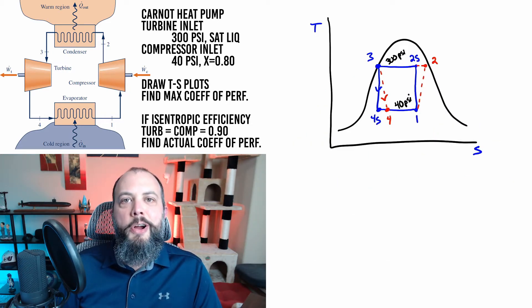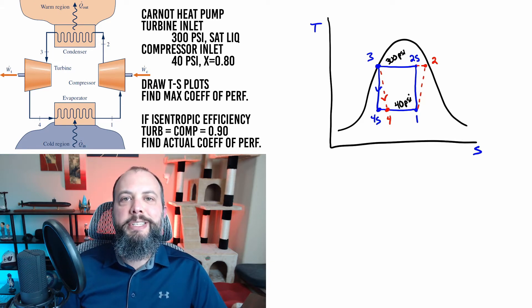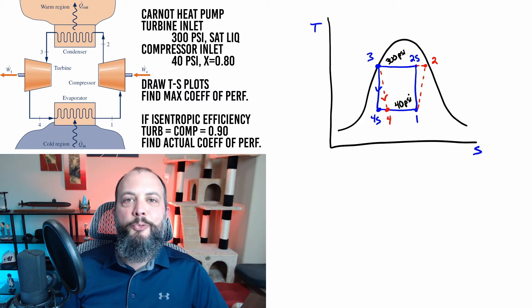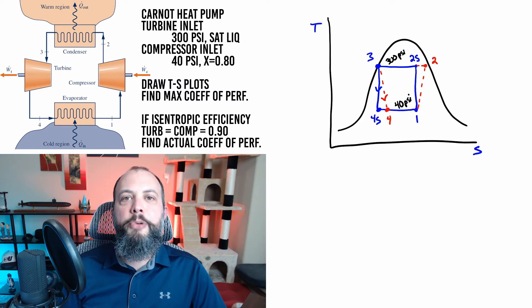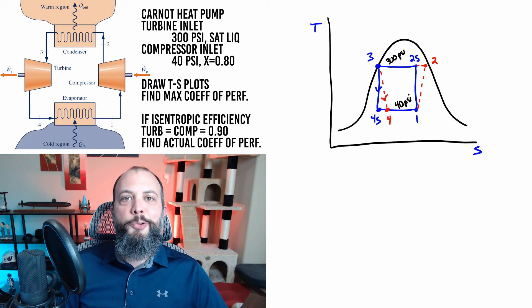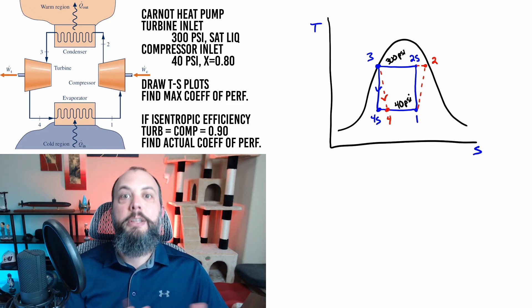And so with the information we have so far I'm able to draw the shown T-S plot. I've labeled point one as the inlet to the compressor and notice that I put an S after points 2 and 4. This blue rectangle is the main Carnot heat pump. Points 1 to 2S and points 3 to 4S are the isentropic steps. The dashed lines in red from 1 to 2 and from 3 to 4 are what we'll get to later in the problem once we add isentropic efficiencies for the compressor and the turbine.